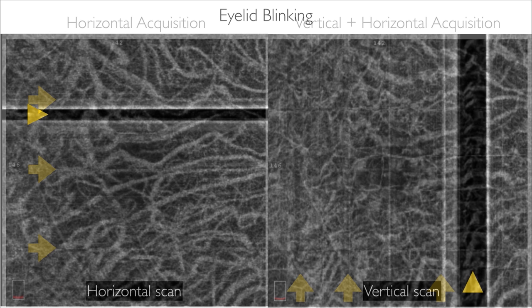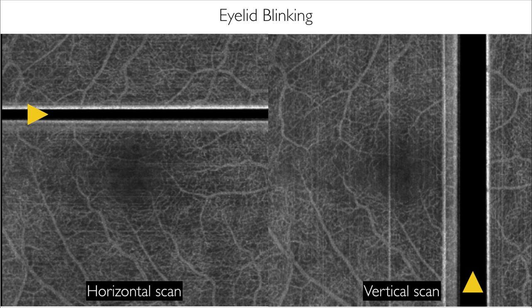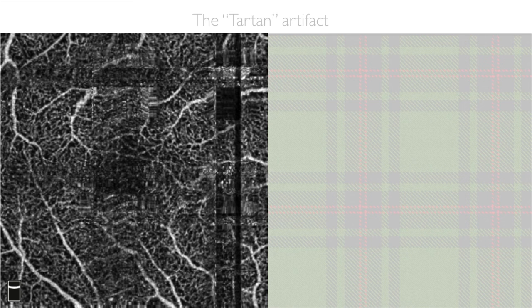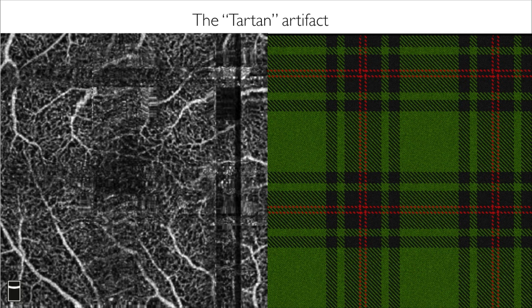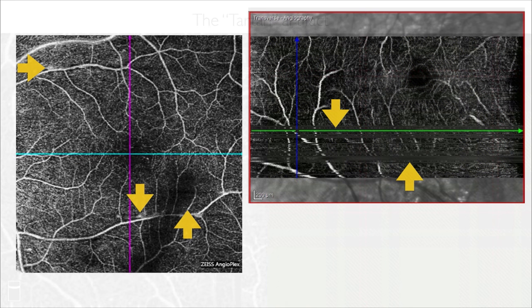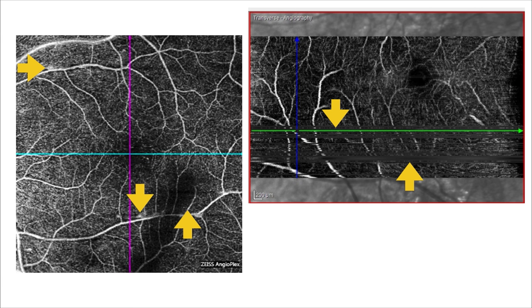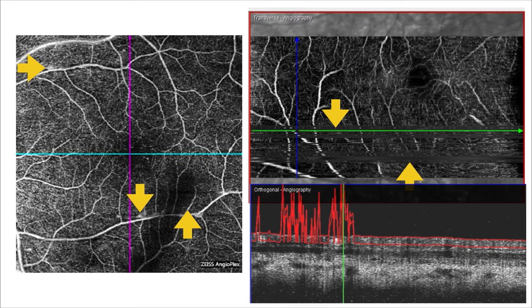Then we have blinking, which of course creates a black line. The black line can be combined by the software and you get what my colleagues and I call the 'Tartan artifact'. There are also artifacts not due to movement - in an early Heidelberg software release, you see lines that are not white because of the tracking system, which is very nice. But these lines are actually due to wrong segmentation. Wrong segmentation can also create artifacts.